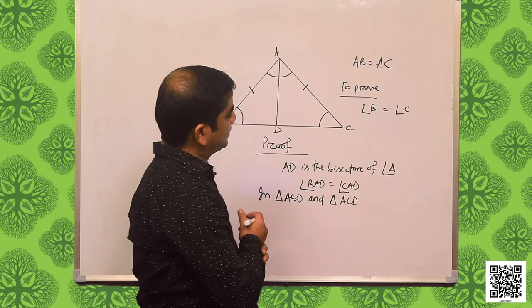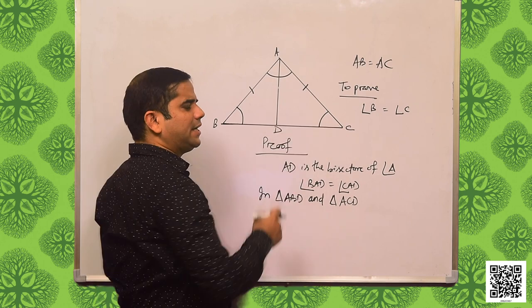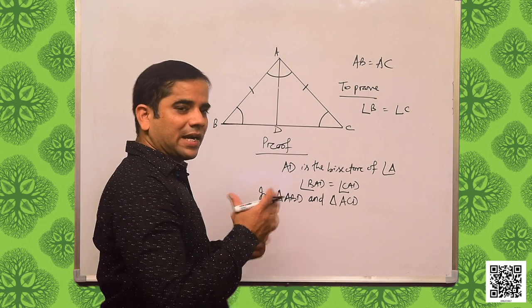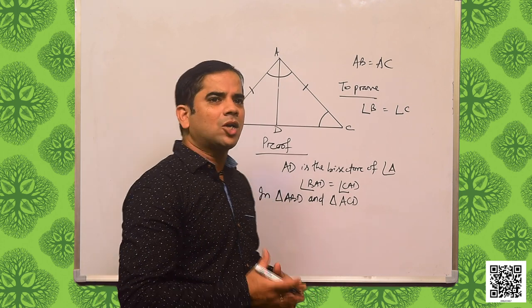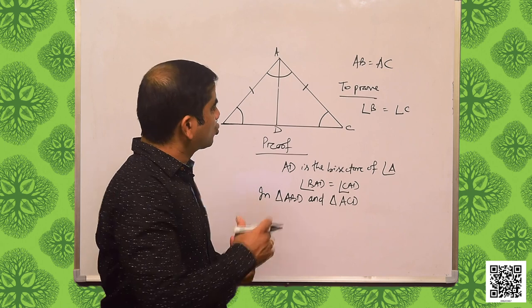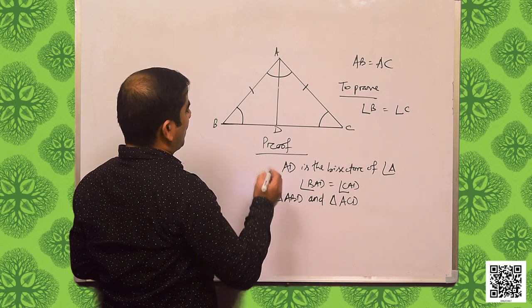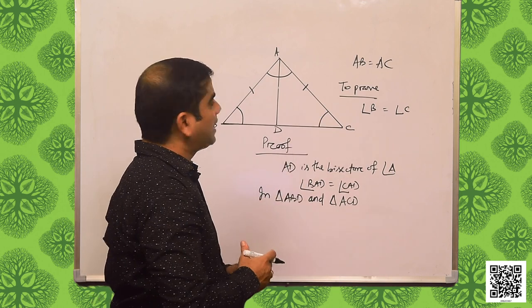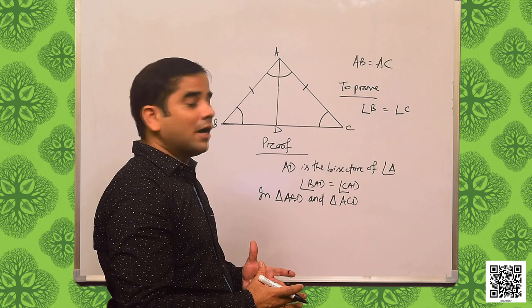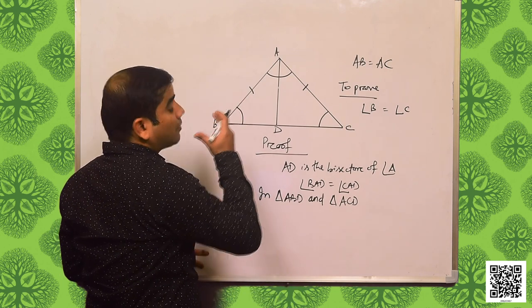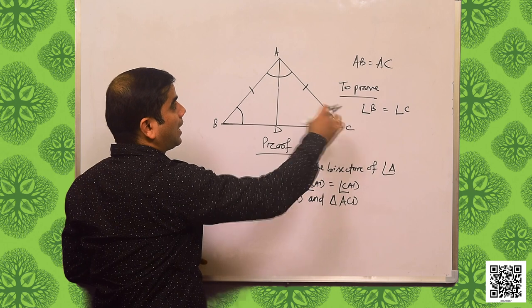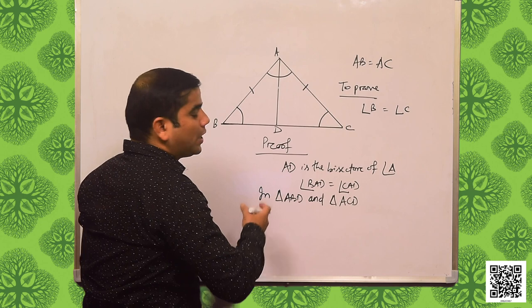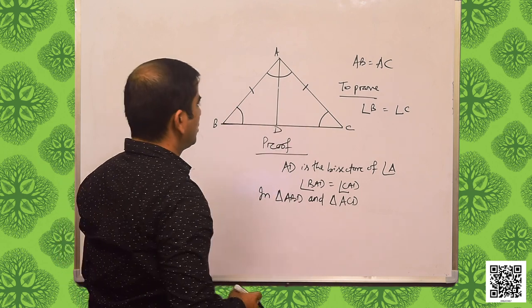Why are we doing this? We need to prove angle B is equal to angle C. We have known about congruency, and we know that when two triangles are congruent, then the corresponding sides and angles are equal to each other. So, if we can prove that triangle ABD and triangle ACD are congruent to each other, then automatically the value of angle ABD will be equal to angle ACD — that means angle B is equal to angle C. So, now we are going to prove that these two triangles are congruent.